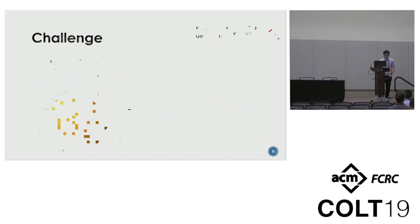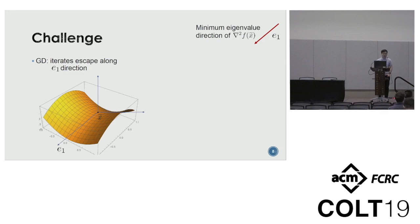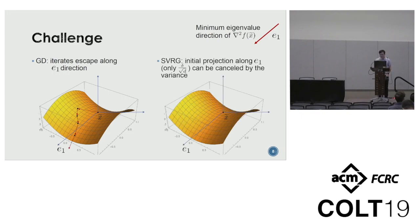What's the challenge? Suppose x_θ is the saddle point and e_1 is the decreasing direction. For gradient descent, after the perturbation, there will be some initial projection along the e_1 direction, along the decreasing direction. Gradient descent will just escape along the e_1 direction. But for SVRG, suppose the perturbation radius is delta. The initial projection along the e_1 direction is just delta over square root d. This small projection along the e_1 direction can be easily canceled by the variance. After the cancellation, there is no projection along the decreasing direction, so there is no hope to escape the saddle point anymore.